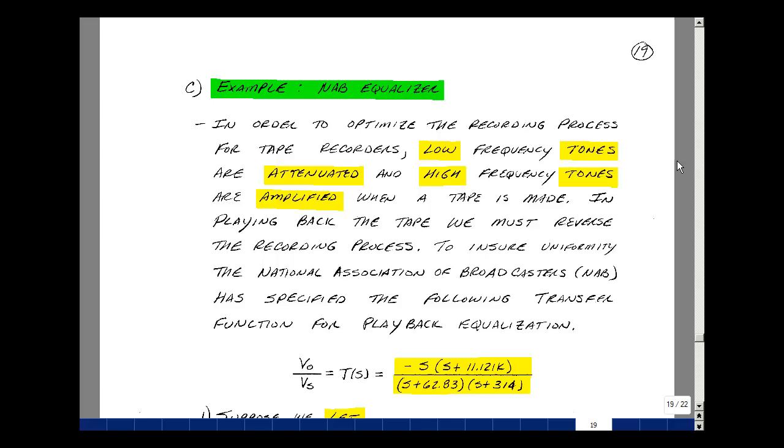This lesson deals with the National Association of Broadcasters Equalizer. You can find these notes in the ECE-202 eBook in Chapter 11, starting on page 19. In order to optimize the recording process for tape recorders, low-frequency tones are attenuated and high-frequency tones are amplified when a tape is made.